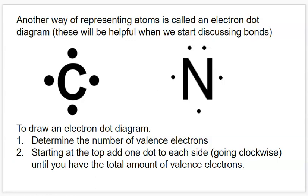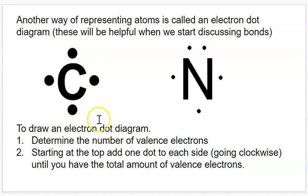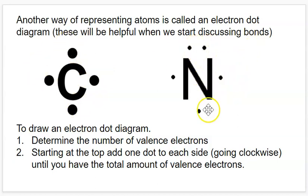If we can determine how many valence electrons an element has — which we can usually do by looking at its position on the periodic table, which column it's in — all we have to do is write the atom symbol and then show how many valence electrons it has by putting one on top, one right, one bottom, one left, and then doubling up if we have to. Carbon, with only four valence electrons, will just have one on each side. Nitrogen, which has five, will put two on top and then one on each of the other sides.